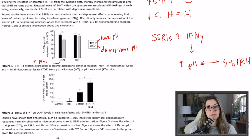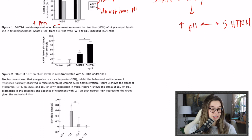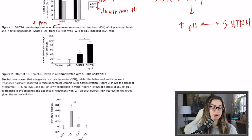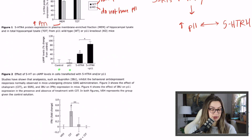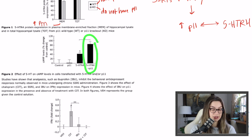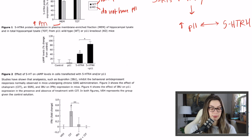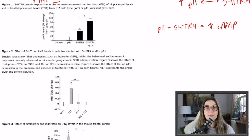Moving to Figure 2: the effect of 5-HT on cyclic AMP levels in cells transfected with 5-HTR4 and/or p11. The axes show cAMP levels as percent change from control. The groups are: control, p11 alone, receptor alone, and both together. The cells that received both the receptor and p11 show a significantly larger increase in cAMP. So I'm writing down: p11 plus 5-HTR4 equals increased cyclic AMP.